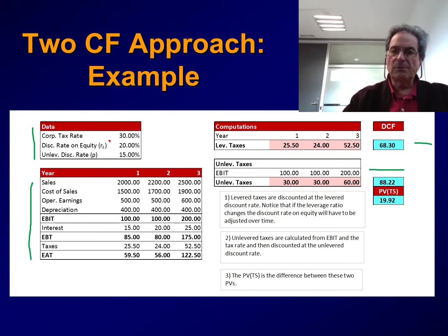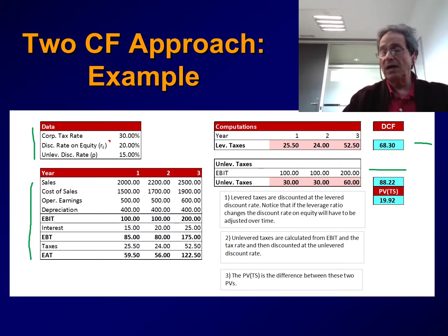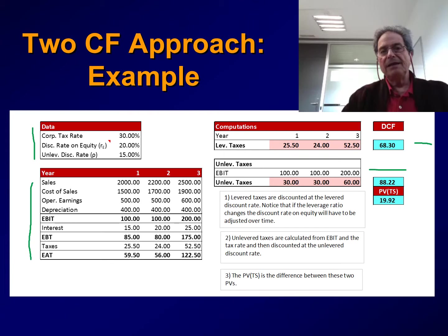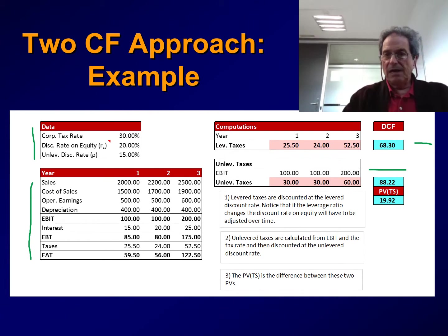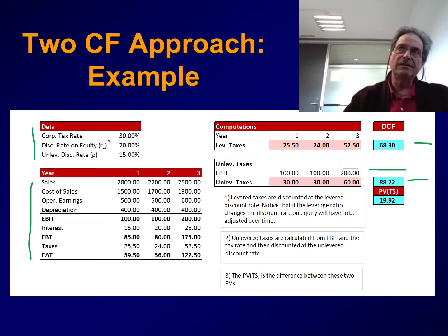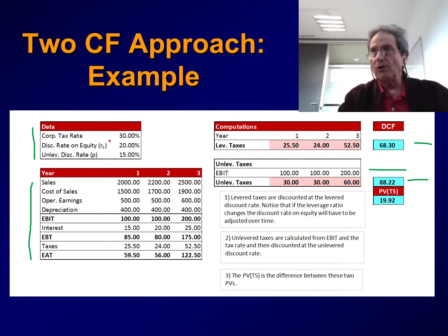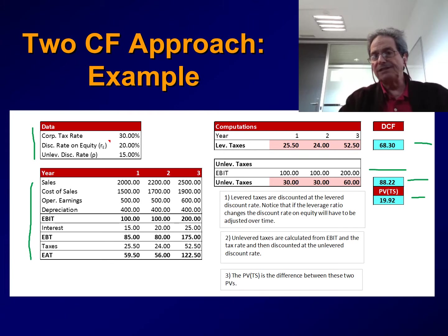Now let's proceed with the unlevered taxes. We start with EBIT — earnings before interest and taxes — of 100, 100, and 200, taken from the pro forma balance sheets. We apply the corporate tax rate of 30%, so unlevered taxes will be 30, 30, and 60 over the next three years. We calculate the present value of these unlevered taxes using rho, the unlevered discount rate, and obtain a present value of 88.22. Then the present value of the tax shield is simply the difference between these two present values: 88.22 minus 68.30, giving a value of 19.92.